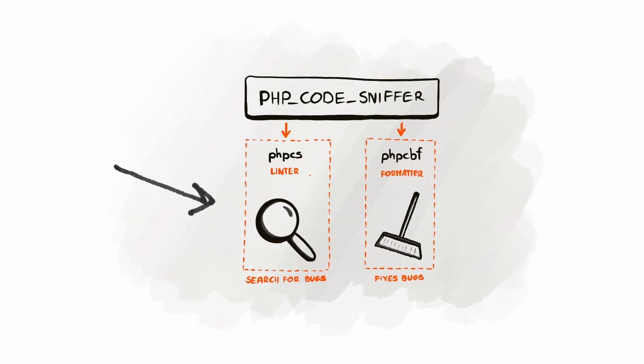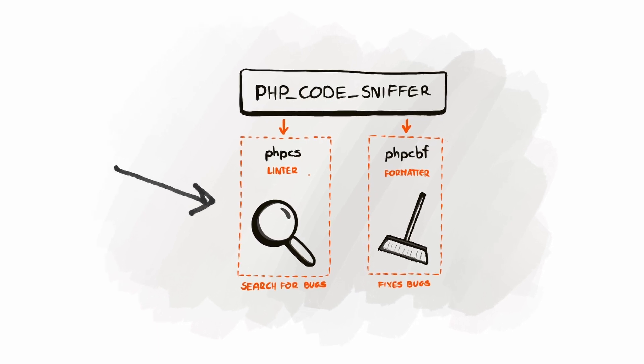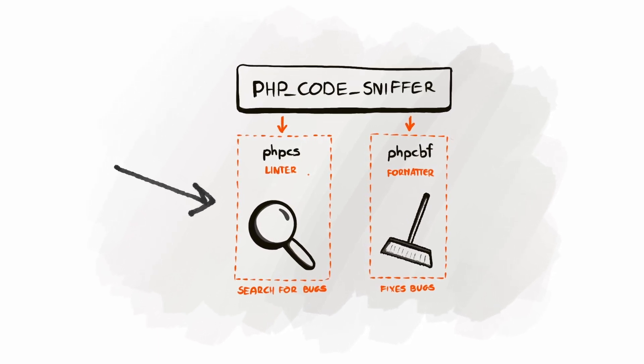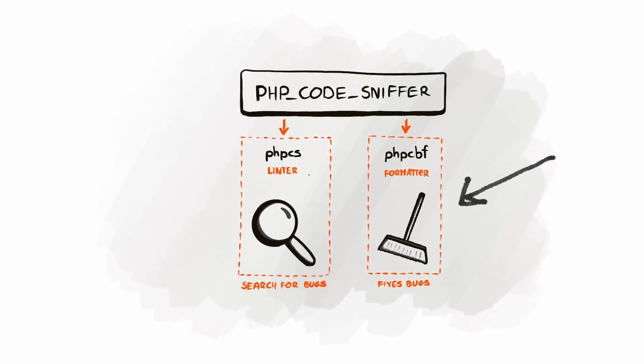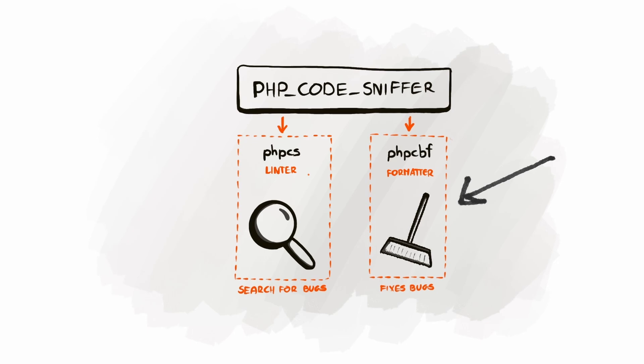Linters analyze the code for errors, potential bugs or style violations based on predefined rules. They catch issues that might slip through unnoticed, helping you write cleaner, more error-free code and maintain consistency. Formatters, on the other hand, automatically tidy up the code, ensuring consistent formatting across the project. They handle things like indentation, spacing and code layout, making your code nice-looking and organized without manual work.